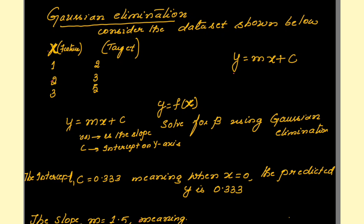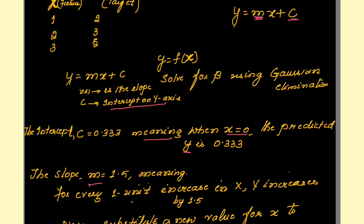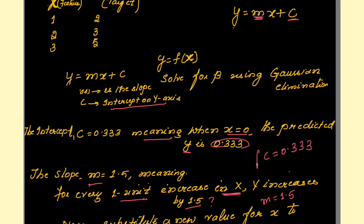We can make use of the Gauss elimination method to arrive at the values for m and c. c is the intercept on the y-axis, meaning when x is equal to 0, what is the value of y? And m is the slope, meaning for every one unit increase in x, y increases by what value? In this video I shall explain how we arrive at these values of c and m.